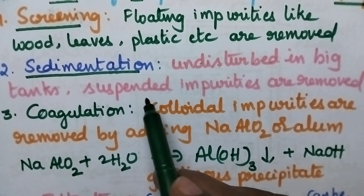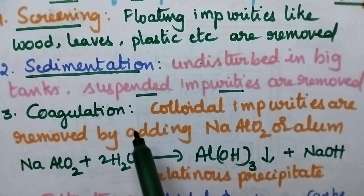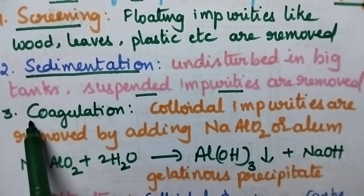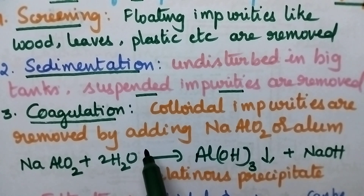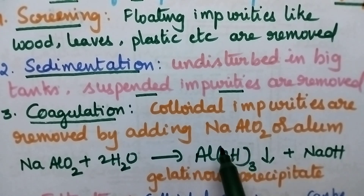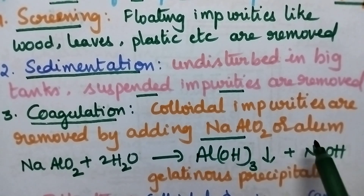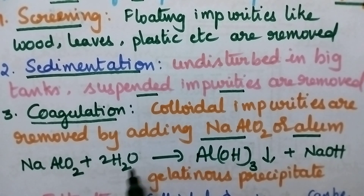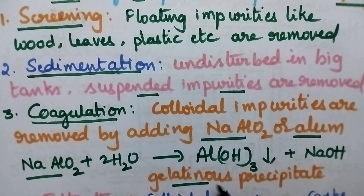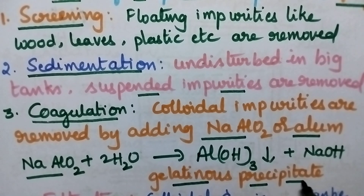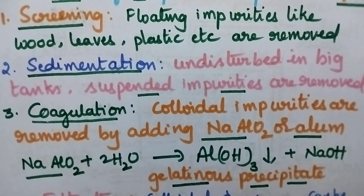Then the suspended impurities will be removed from the water. The third step involves coagulation. In this method, colloidal impurities can be removed from the water whenever water is treated with coagulants such as sodium aluminate or alum. For example, when water is treated with sodium aluminate, it results in the formation of aluminum hydroxide, which is a gelatinous precipitate that traps all types of colloidal impurities.